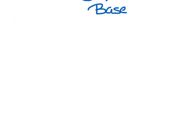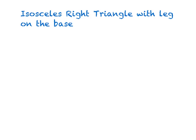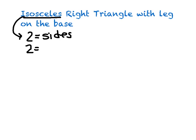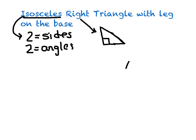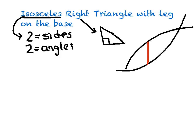Let's go ahead and focus on our first cross-section, and that is an isosceles right triangle with the leg on the base. There are quite a few words here. Isosceles means two equal sides along with two equal angles. Right implies that you have a right angle in your triangle. And the leg is on the base — so if I take this cross-section, the leg is sitting across like this.